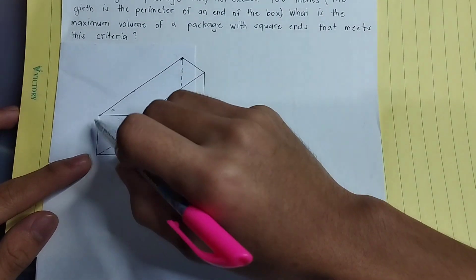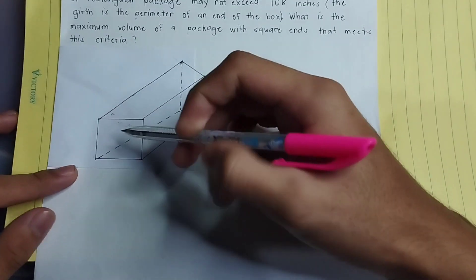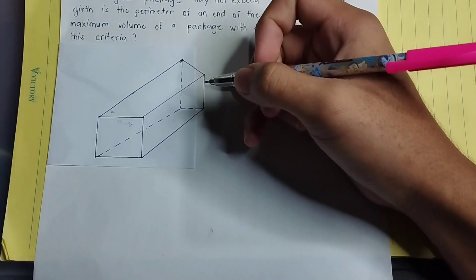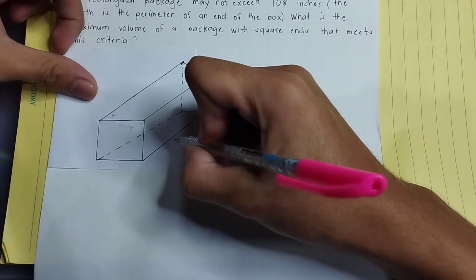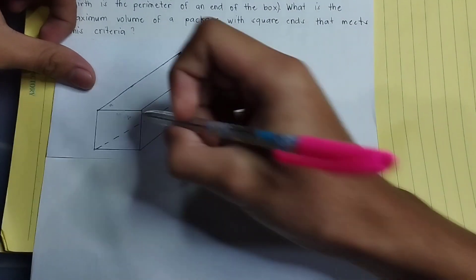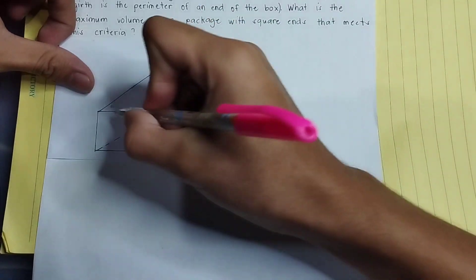This box is the girth. So we can say that we can put a variable into the length, like variable y over the length here, and then we can put in this girth a variable x, x, then x and then x.